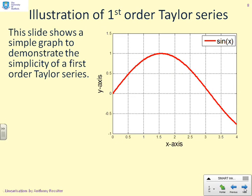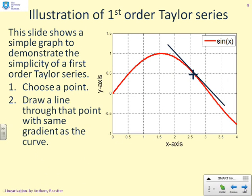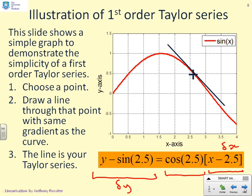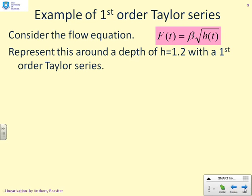Here's an example: a nonlinear curve, sin(x). To find a first-order Taylor series: first, choose a point — you can see it marked with a cross. Next, draw a straight line through that point with the same gradient as the curve — and that straight line is your Taylor series. For example: y minus sin(2.5) equals cos(2.5) times (x minus 2.5), where this term is delta_y and this term is delta_x. Hopefully you'll say: doing a first-order Taylor series is straightforward. Now let's apply it to a systems modeling case.